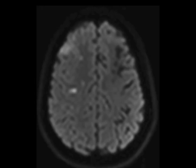The images demonstrate numerous punctate and more confluent acute infarcts within the right caudate head and watershed territory of the right MCA and ACA territories.